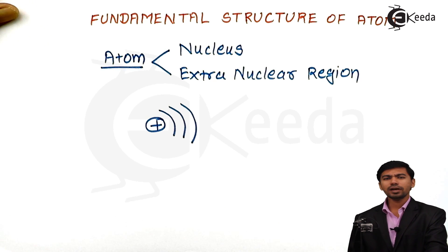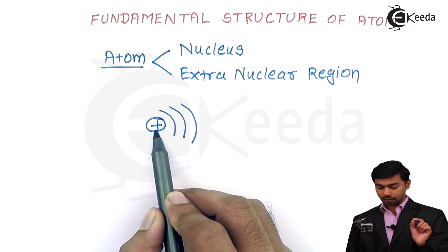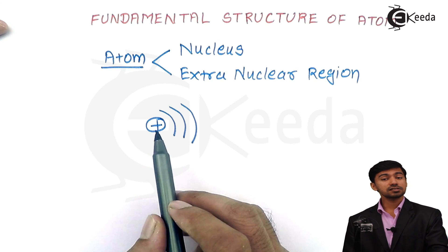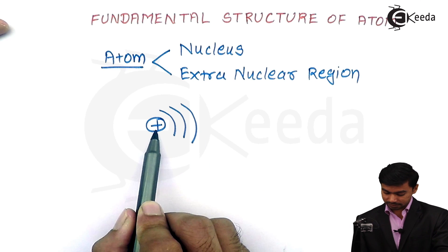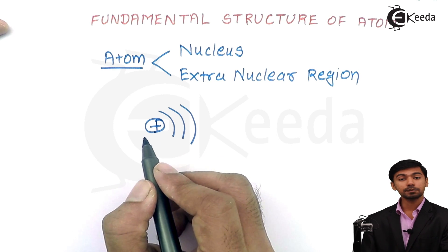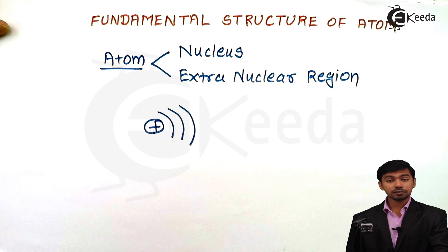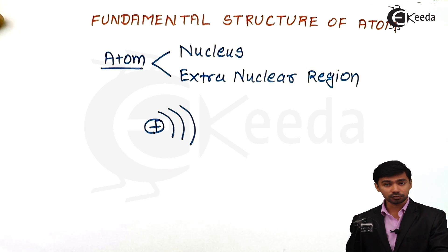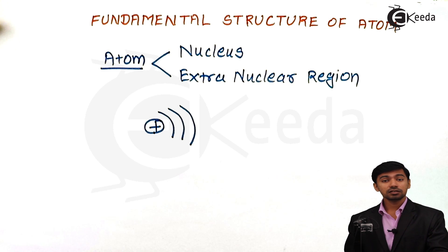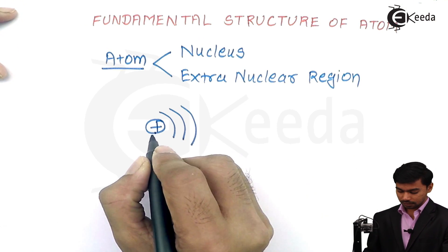But why have we written a plus symbol at the center of the atom, that is the nucleus? This center part is the nucleus, and we are putting a plus symbol. The reason is that the atom divides into two parts — nucleus and extra-nuclear region — but these two parts further subdivide into some other particles. Let us see what they are.